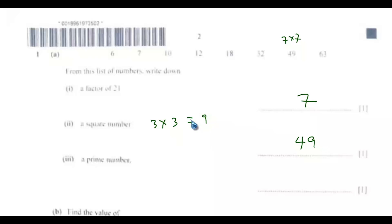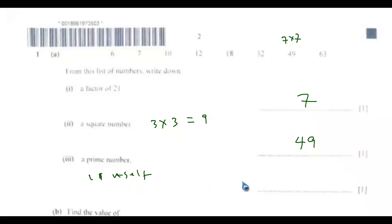A prime number is a number that has only two factors: one and itself. So 7 is a prime number because it has only two factors, one and itself. 6 is not a prime number because aside from one and itself, it is divisible by 2 and 3. 10 is also not a prime number as it is divisible by 2 and 5, and so on.